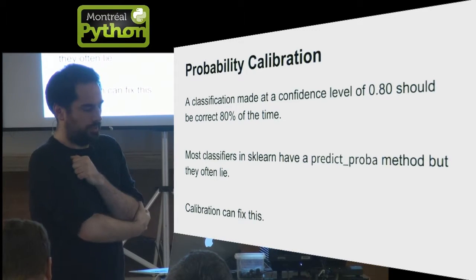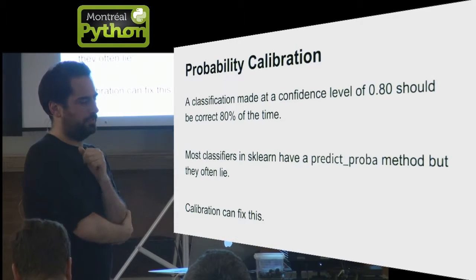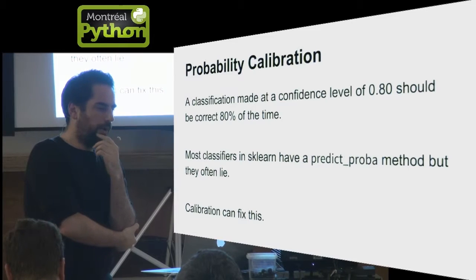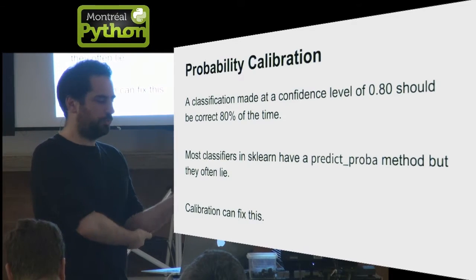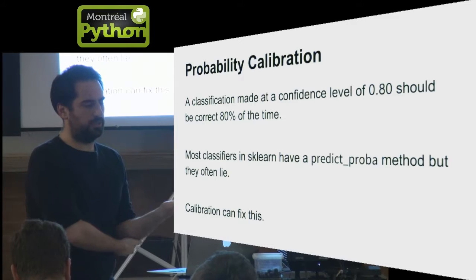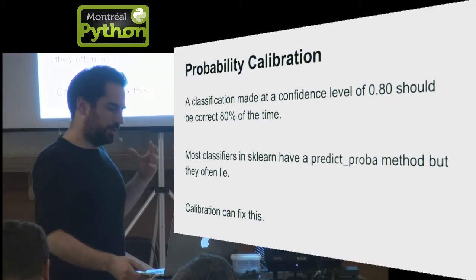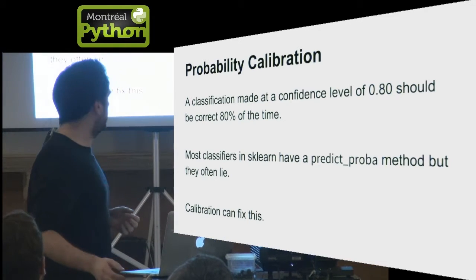Most scikit-learn classifiers have a predict probability method, but the raw prediction value is cheap to compute but not necessarily good. By using an external calibration tool, we can fix this.